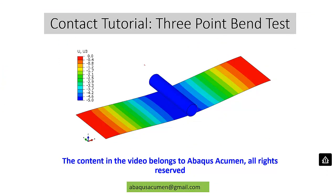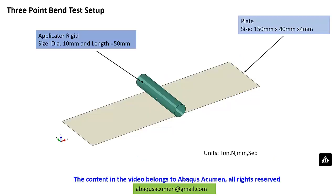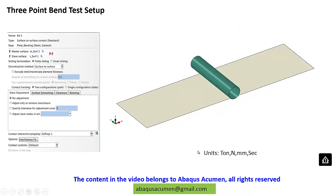We are going to do a three-point bend test with a cylindrical applicator and a flat plate. The applicator is 10 millimeter diameter and 50 millimeter length. The plate is 150 by 40 millimeter and 4 millimeter thick. Units we are going to use are SI: Newton, millimeter, and second. Very specific to this contact, we are going to use finite contact.